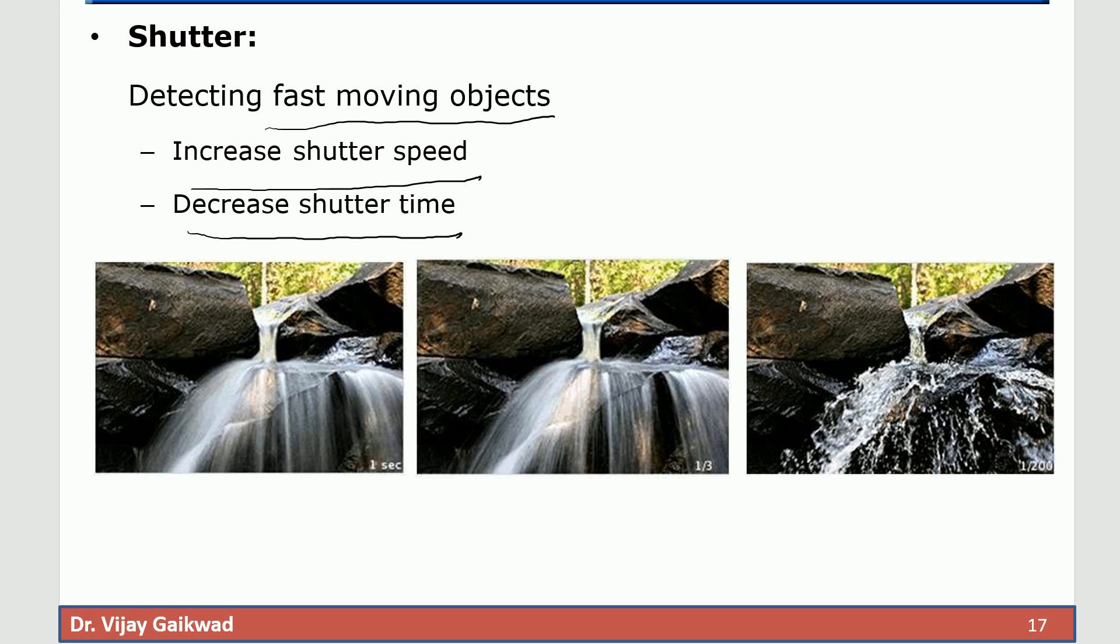If you see in the following image, image number one is having shutter time of one second and you can see that you have missed all minor details from the waterfall. In image number two the shutter time is 1 by 3 and you are trying to get minor details from the waterfall. If the shutter time is decreased to 1 by 200 then you get every minute detail of the waterfall. In image number one shutter time is more we missed the minor details. In image number 2 the shutter time is decreased to 1 by 3 and in image number 3 the shutter time is further reduced to 1 upon 200 and because of that every detail of the waterfall is captured very nicely.